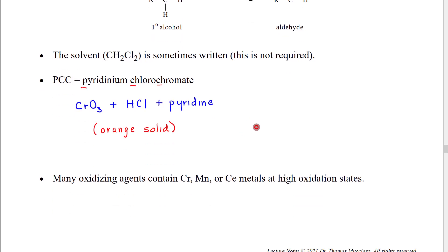At this point I'd like to point out that there are many oxidation agents that are used in organic chemistry. Most of them however contain either chromium high oxidation state like chromium-6, high oxidation state manganese like manganese-7 or high oxidation state cerium like cerium-3. We're going to see some of these in our later discussions.